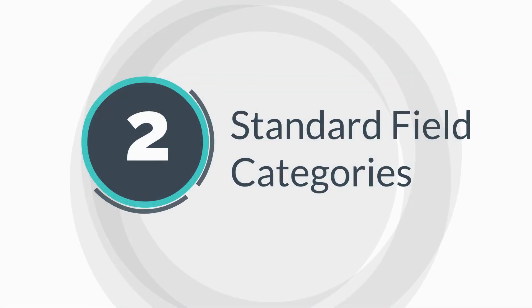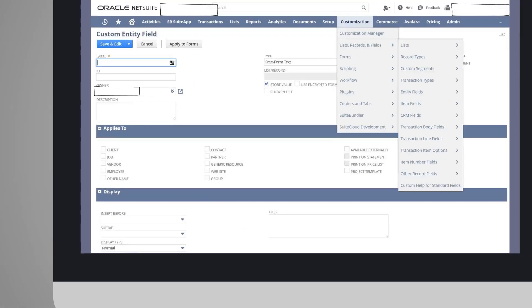Next, let's take a look at the standard field categories. You may notice that when you go to customization, list records, and fields, there are seven field categories to choose from.